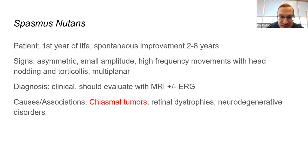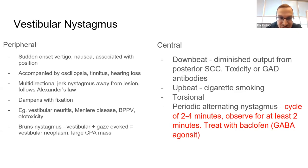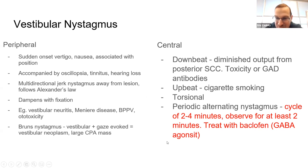Spasmus nutans tends to resolve later, but you're mostly thinking of sellar or parasellar tumors as a cause — something to check for. For acquired nystagmus, periodic alternating nystagmus has very good treatment with baclofen — that may come up on a question.